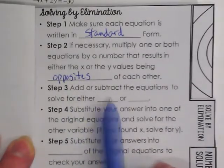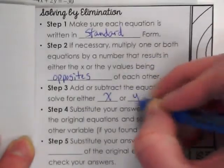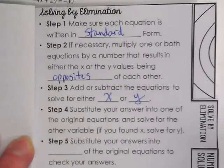Step three. Add or subtract the equations to solve for either x or y. Whichever one you didn't eliminate, you solve for first.